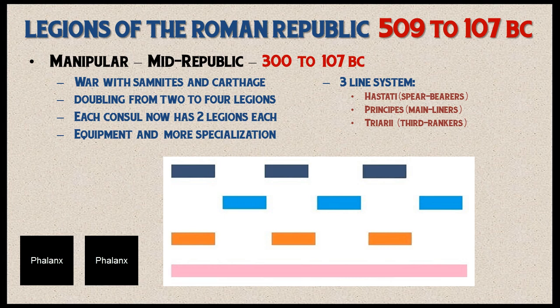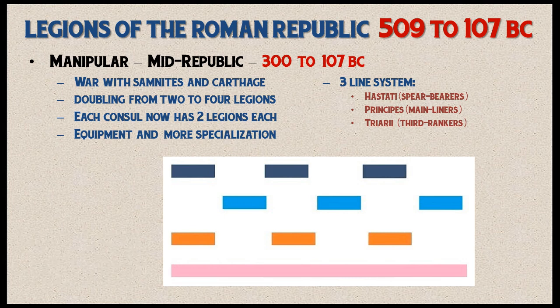The reason the Romans switched to the maniple was because of an ancient feud with a warlike tribe called the Samnites from central Italy, who hammered the Romans in several battles. Following the cliche — if you can't beat it, copy it — the Romans took the structure of the maniple the Samnites were using and adapted it for themselves.